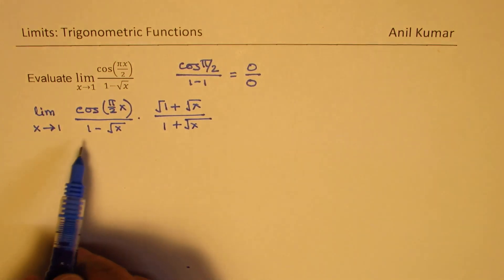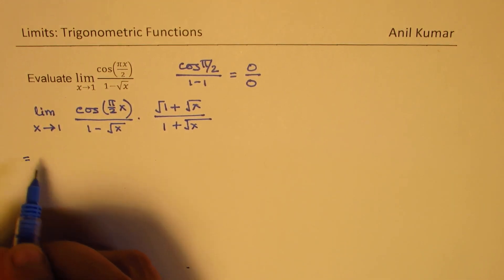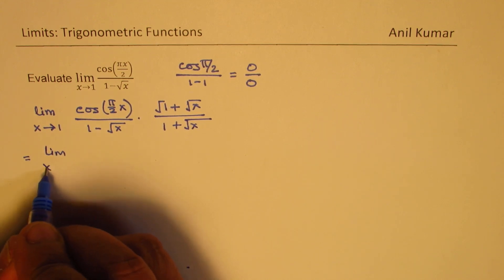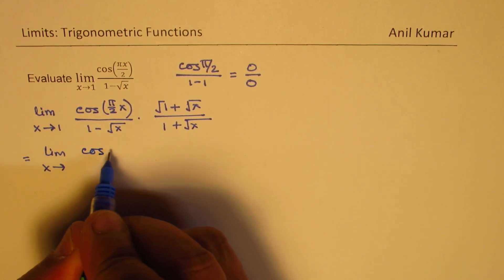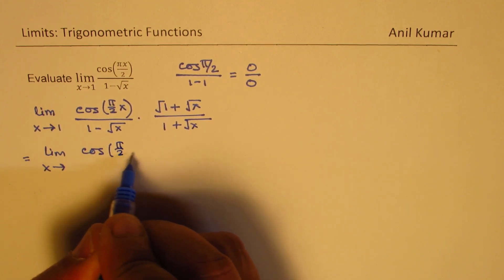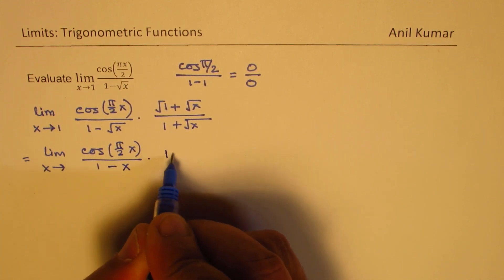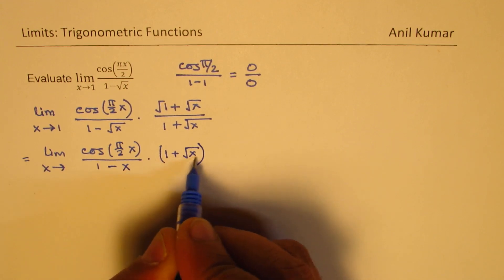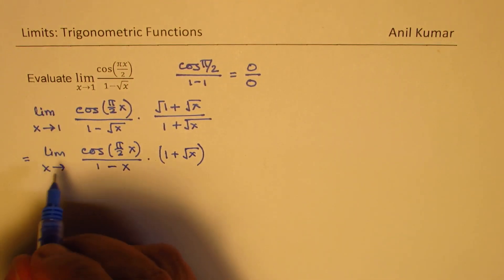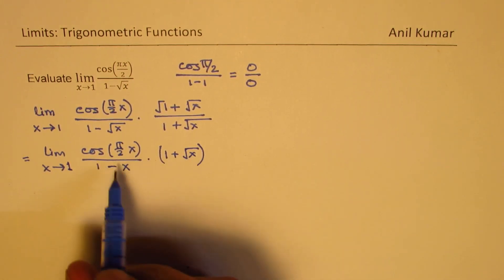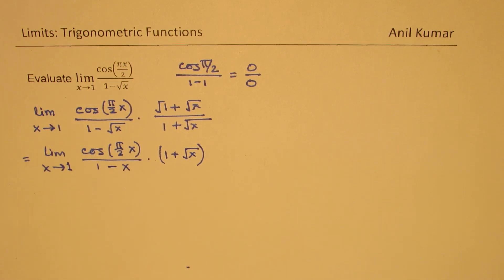In that case, we get the denominator as 1 minus x. So we can write this as cos(πx/2) over (1-x) times (1 plus square root x). Now this (1 plus square root x), if I substitute 1, we'll get 2. But this part is still 0/0.